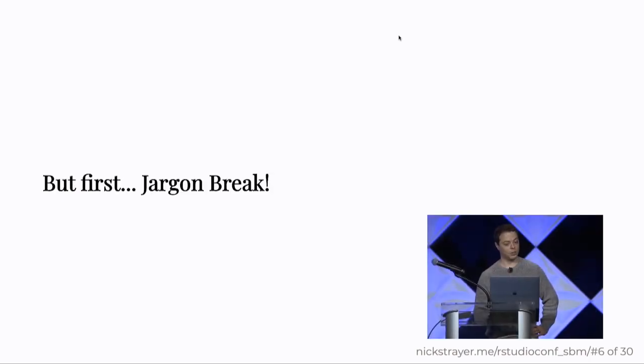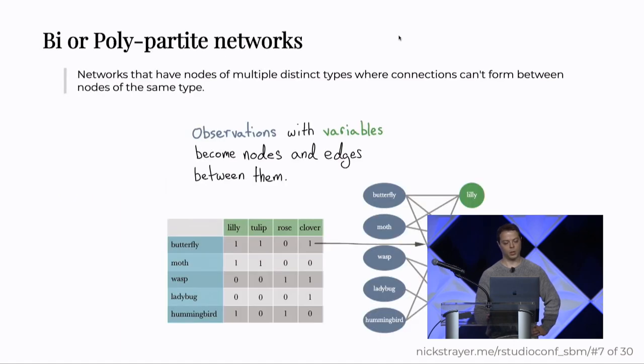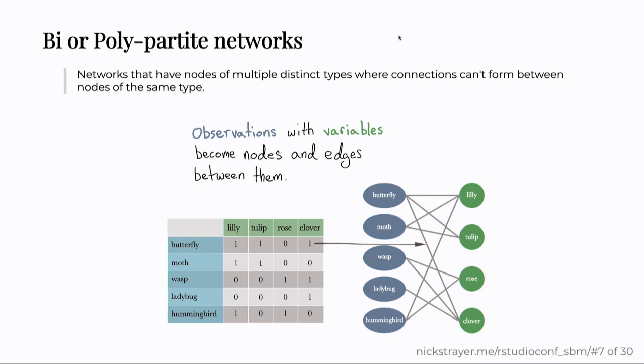So let's start with why. But first, I'm going to do a jargon break. A lot of times you sit in talks, especially in modeling talks, and people throw out phrases that you don't know, and then you stop listening, and that's no fun. So first, I'm going to define bi- and polypartite networks and networks in general.